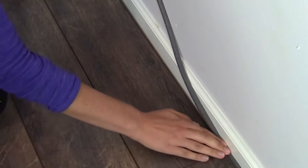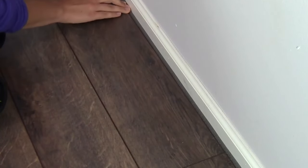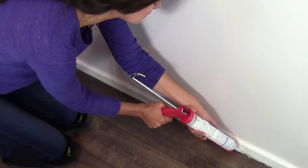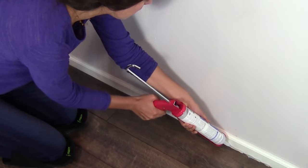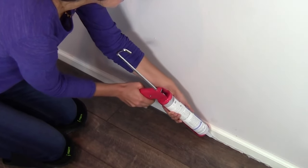Fill the gap with a foam backer rod. Then create a watertight seal by applying 100% silicone sealant along the entire perimeter of the room and around fixed objects.